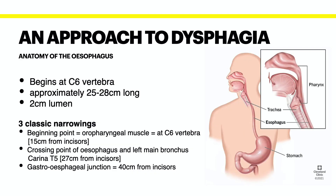In terms of anatomy, the esophagus starts at the sixth cervical vertebra and is approximately 25 to 28 centimeters long. There is a five centimeter segment in the neck, a one centimeter segment in the diaphragm, and a two to three centimeter segment in the abdomen. The lumen of the esophagus is typically about two centimeters wide.